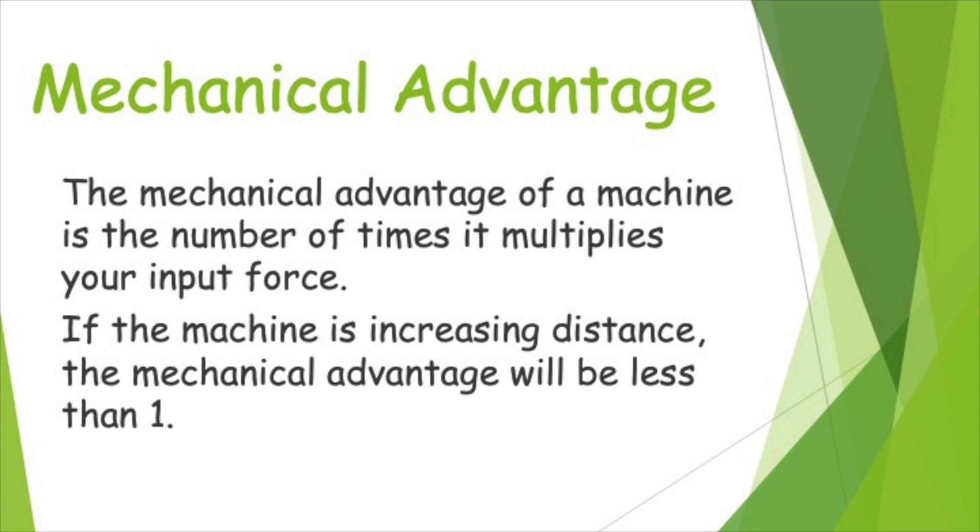So if you're putting 10 newtons of force into a machine, but you're only getting five newtons out because it's doing it over a longer distance, then that mechanical advantage would be 0.5 because that would be half. Other machines that increase your force, that mechanical advantage will be greater than one. So let's look at an example of how that works.